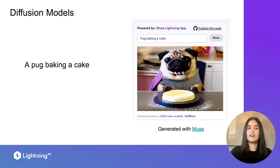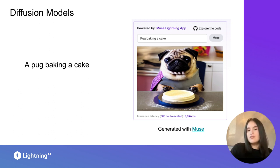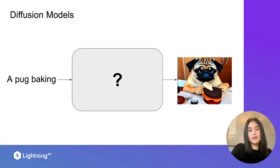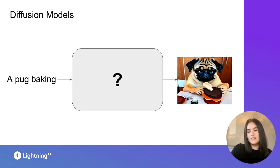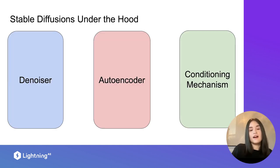How can we look under the hood of stable diffusion and start using it for our applications? To do so, we need to understand that stable diffusion is formed by three blocks. We're going to start with a prompt text that goes through a black box model and generates an image. Inside that black box, there are three main blocks: a denoiser, an autoencoder, and a conditioning mechanism.